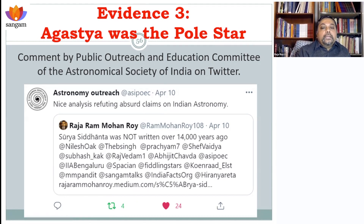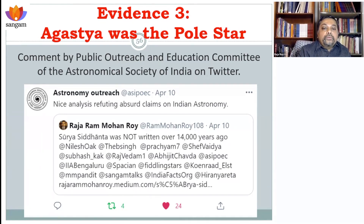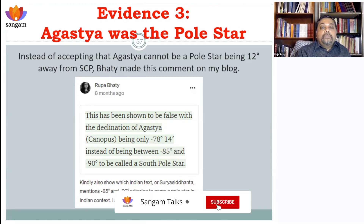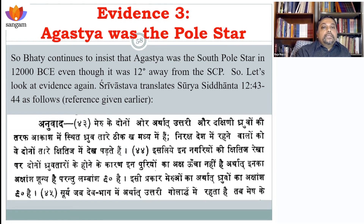We are at a time when we want to know our true history, but we have to be very careful because all kinds of claims are being made. If those claims are too fantastic, they have to be refuted. After I published the article, Ms. Rupa Bhatti gave a comment saying that even though Agastya is 12 degrees away from the South Celestial Pole, it is still a South Pole Star. There is no proof given for how far away a star can be and still be called a pole star — saying 12 degrees away is still a pole star is nonsensical.